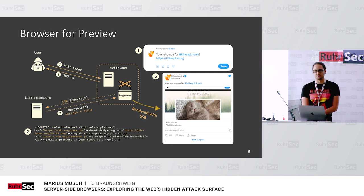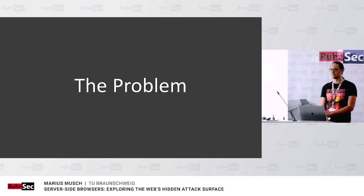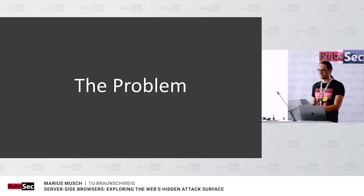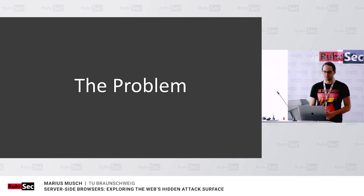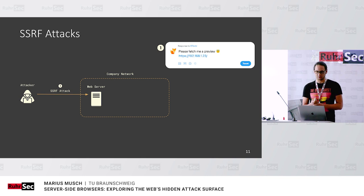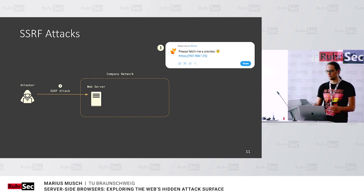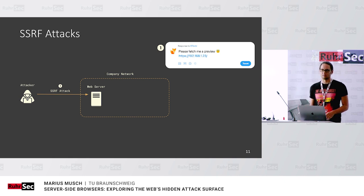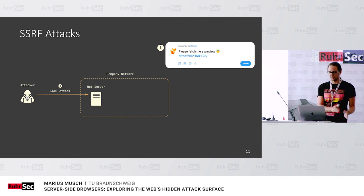But are there any problems? Well, if there weren't, I wouldn't be here today. You can already imagine that if you replace curl with Chromium, the attack surface is much larger. Before I go into more details, I want to do a short recap about server-side request forgery. I guess this is a well-known topic since it's now in the OWASP Top 10, but I want to recap so we can better compare what's different versus SSRF.